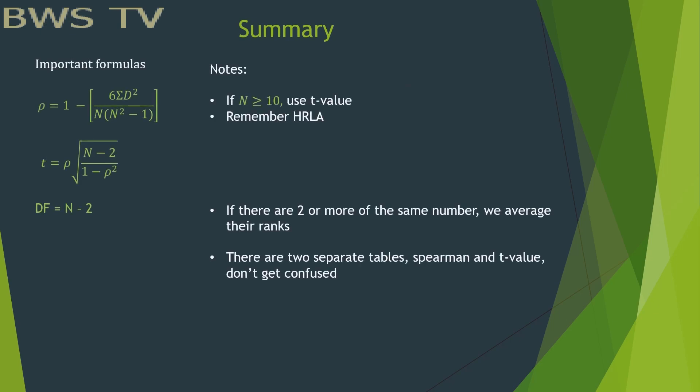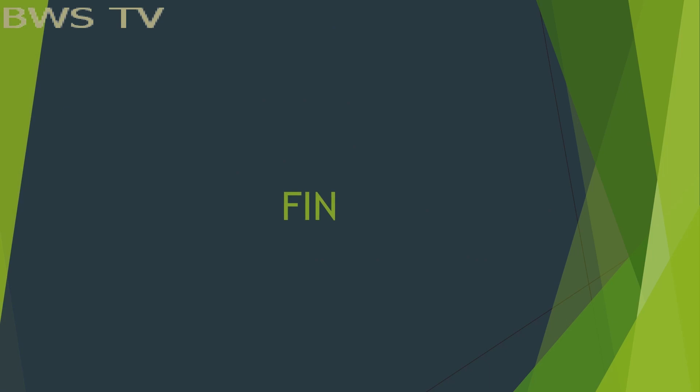If n is 10 or greater, use t-value. Remember HRLA: Higher reject, lower accept. If there are two or more of the same number, we average the ranks. And there are two separate tables, Spearman and t-value. Don't get confused. Thanks for watching, bye.